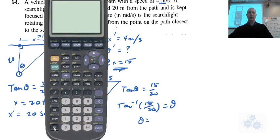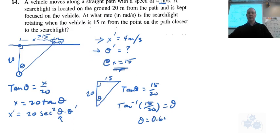So jump on your calculator. Go ahead and do that. Second function, tan. 15 over 20 should be 0.6435. So that's the theta right here. That's where it goes.